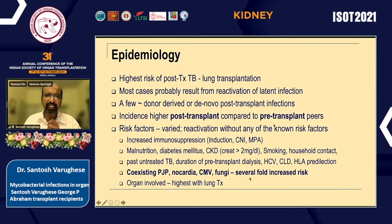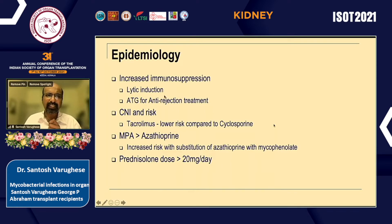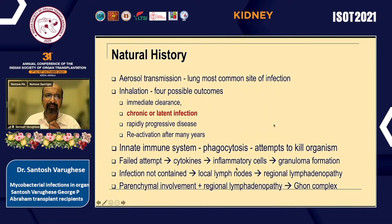Coexisting infections confer higher risk, and the highest risk is in lung transplantation. Regarding immunosuppression, the greatest risk is with lytic induction or ATG given for rejection treatment. Among CNIs, tacrolimus has a lower risk compared to cyclosporine. MPA has higher risk compared to azathioprine, and substituting azathioprine with mycophenolate has been reported to exacerbate or cause reactivation of TB. The lung is the most common site of primary infection, with the four possible outcomes being clearance, chronic latent infection, rapid progressive disease, or reactivation.